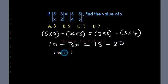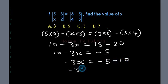So now we have 10 minus 3x equals 15 minus 20, that's minus 5. We subtract 10 from both sides, which gives us minus 3x equals minus 5 minus 10, which is minus 15.